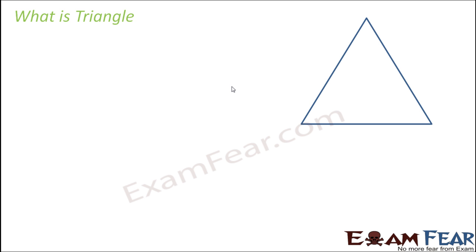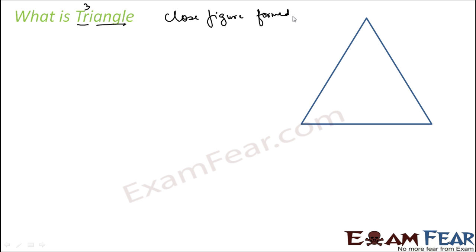The whole chapter is about triangles and congruency of triangles. What is a triangle? The word came from 'tri' meaning three, and 'angle' — something we know from the last chapter. So any closed figure formed by three angles or three intersecting lines is called a triangle.